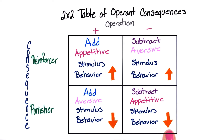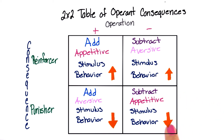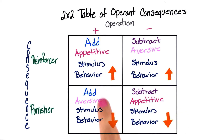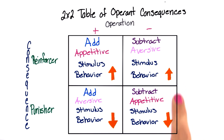Here, you're playing with your video games and you hit your brother, and your mom takes away your video games — you're losing something that you enjoy, and you're less likely to engage in that behavior again in the future. So in this example, this would be positive punishment because you're adding a punisher. And in this box, it would be negative punishment because you're taking away something that is appetitive, or something that we like, and we also see a decrease in behavior.